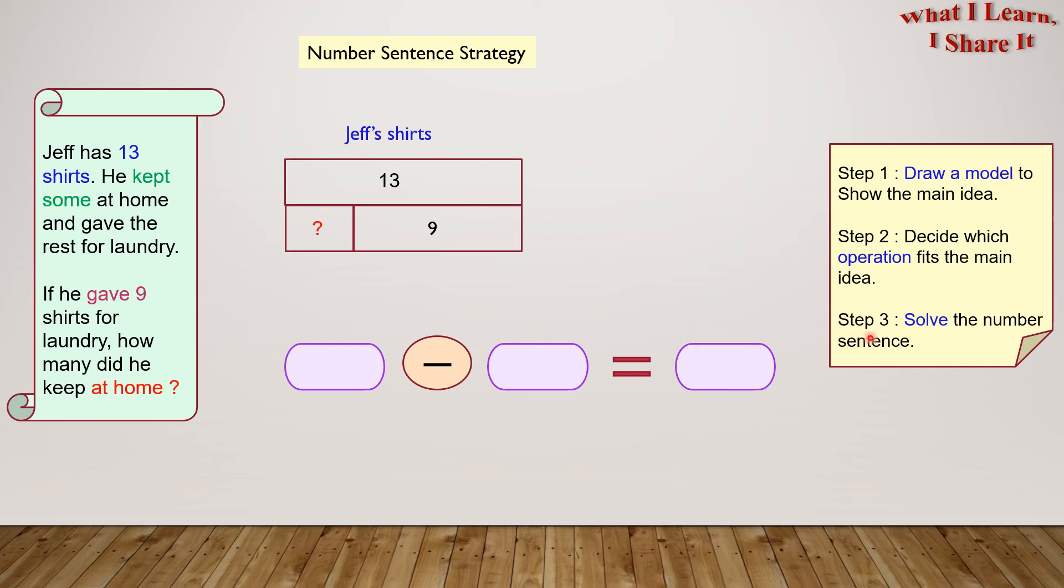Step 3. Solve the number sentence. 13 comes from here. And then 9 comes from here. 13 minus 9 equals 4. The question mark becomes 4. Jeff kept 4 shirts at home.